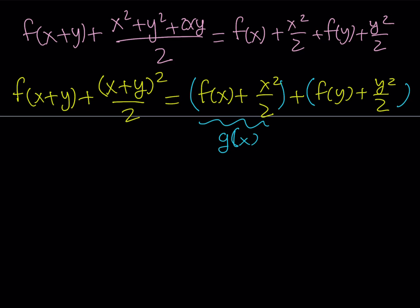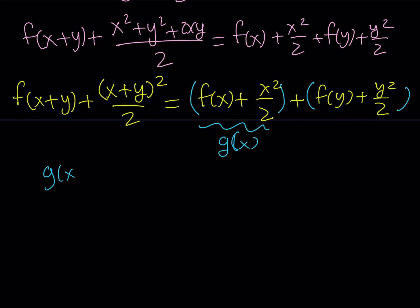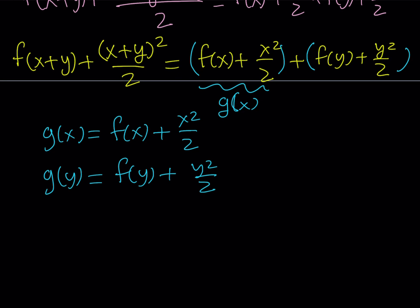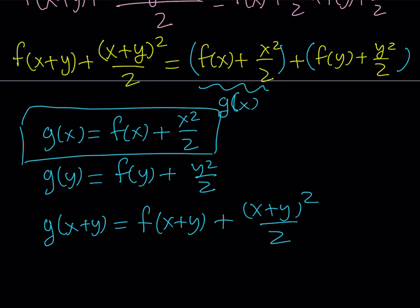So this gives you the following. Since g of x is defined as f of x plus x squared over 2, you notice that if I replace x with y, I get g of y. So g of y becomes f of y plus y squared over 2. And if I replace x with x plus y, and that motivation comes from the left hand side, I get f of x plus y plus x plus y quantity squared divided by 2. All of this comes from the definition of g of x, which we basically defined as f of x plus x squared divided by 2.